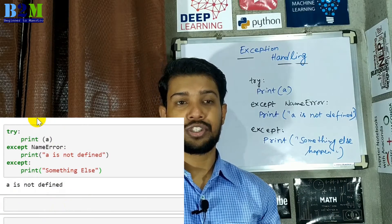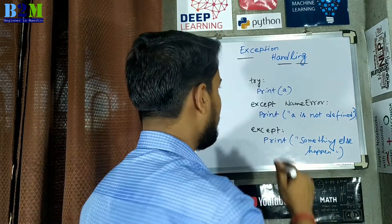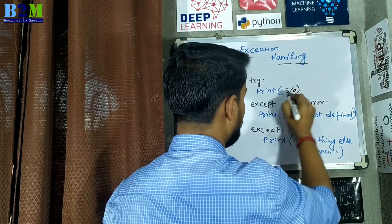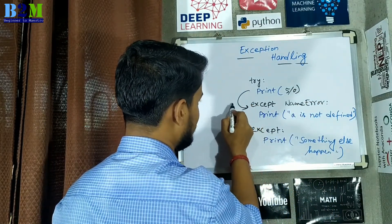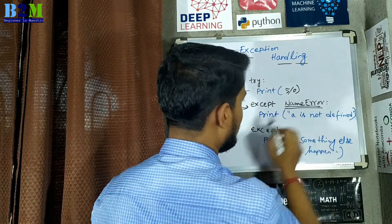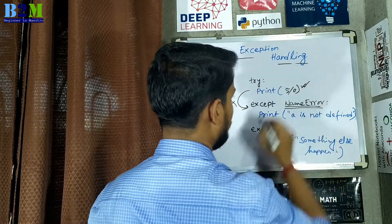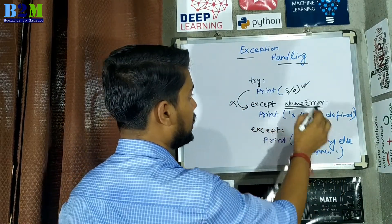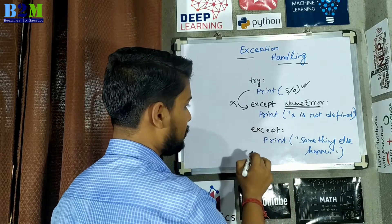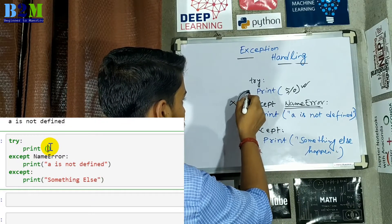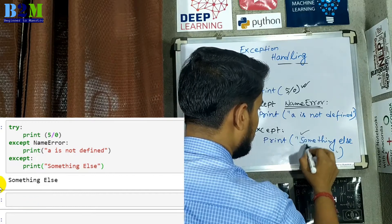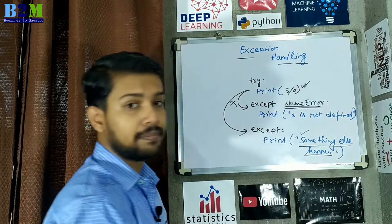For example, if you change the print value — instead of 'a', if you write 5 divided by 0 — then it will not come to the NameError exception block, because here it is a NameError but the actual error is a divide-by-zero error. So instead of going to the named exception block, it will come to the unnamed except block and print 'something else happened'.